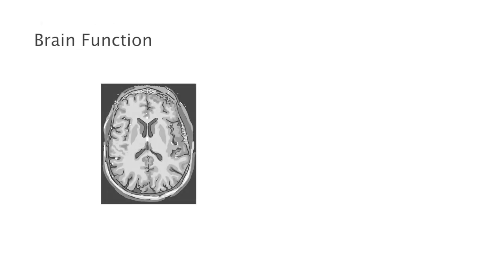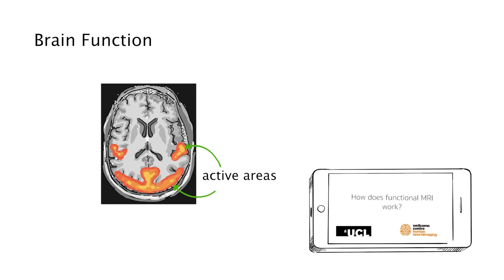Using MRI, we can also detect and localize brain activity or function. This is called functional MRI. When a person is doing something, for example looking at a picture, distinct regions of the brain are active. In functional MRI, these areas are highlighted. We explain this more in another video called How does functional MRI work.